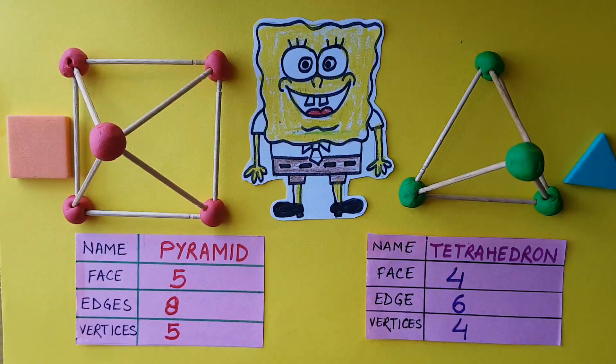In the tetrahedron we use four clay balls. That means it is four vertices of our shape, that is tetrahedron.